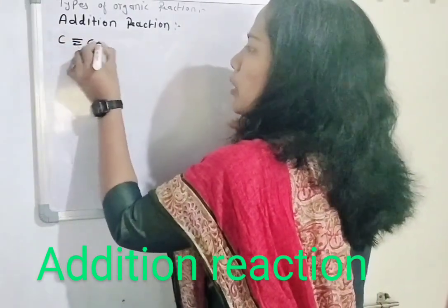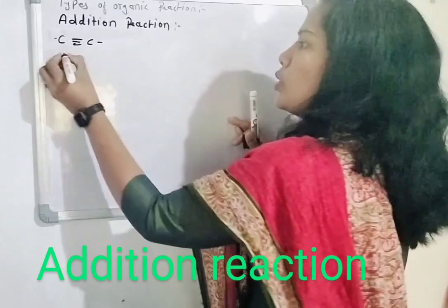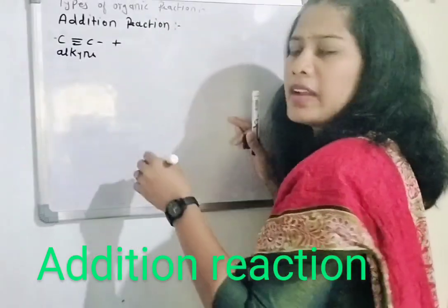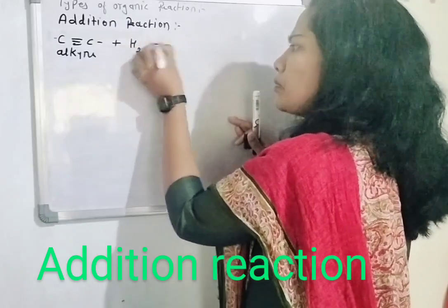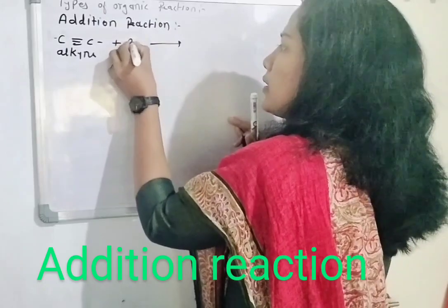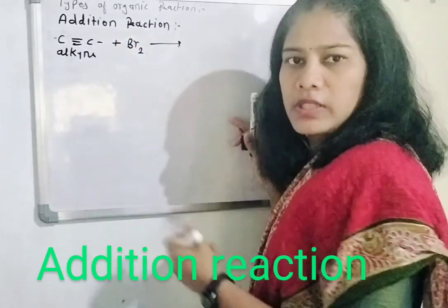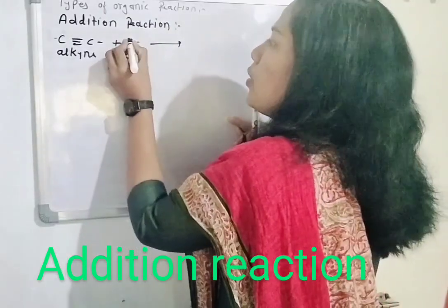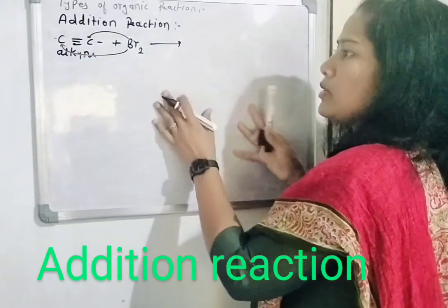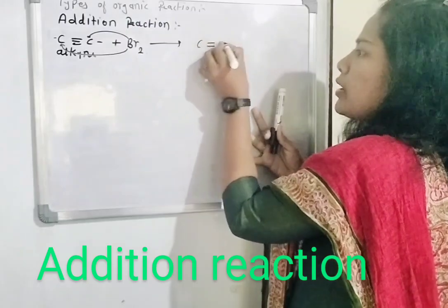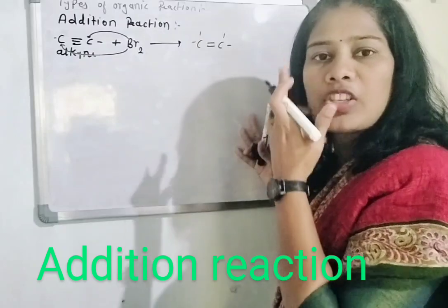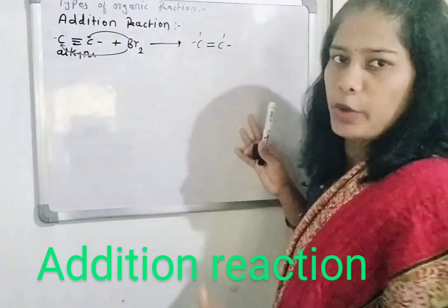Consider here a carbon-carbon triple bond — this is part of an alkyne. When this alkyne reacts with a component, consider here Br2. One Br attacks on the first carbon atom, and the other goes to the second carbon atom. By that, what is formed? A double bond — because the valency of carbon must be 4 bonds. So triple bond becomes double bond.